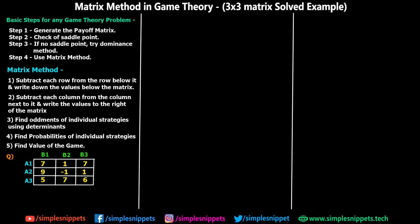Whenever you get a game theory problem, the first thing you do is generate the payoff matrix. Next you check for the saddle point — whether it is a pure strategy or a mixed strategy — and depending on that you apply a particular method. If it is a pure strategy, the maximin method will get you the saddle point and the value of the game. If there is no saddle point, you try the dominance method to reduce the matrix to a simpler version. If that doesn't work, you can directly use the matrix method, which is step number 4.